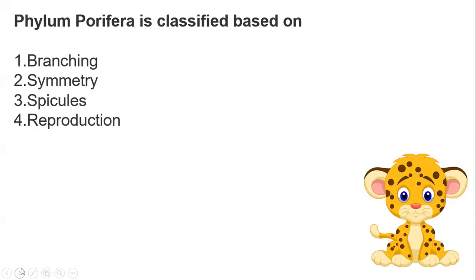Next: Phylum Porifera is classified based on — branching, symmetry, spicules, or reproduction. The answer is spicules. Phylum Porifera is classified on the basis of spicules. Note: there is some audio interruption due to heavy rain, but the questions remain clear.